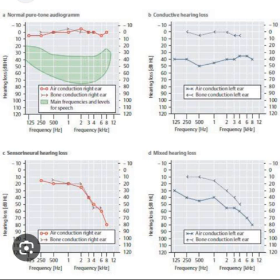The goal of audiogram interpretation is to determine the type and degree of a patient's hearing loss. The three types of hearing loss are sensorineural (SNHL), conductive (CHL), and mixed (MHL) hearing loss.